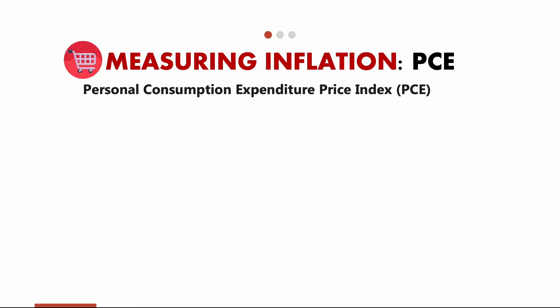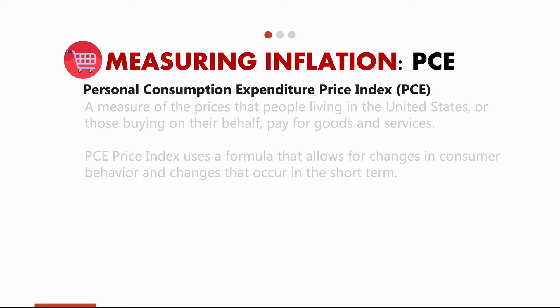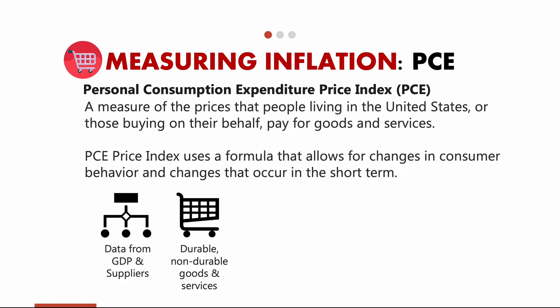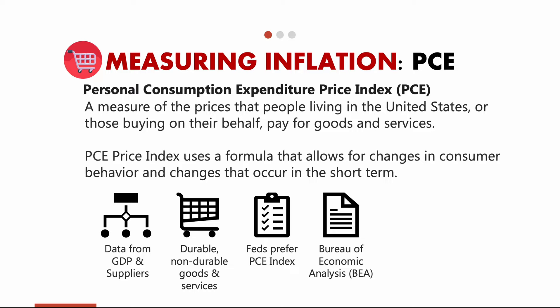The Personal Consumption Expenditures price index, also known as PCE, has a different approach to measuring inflation. It measures prices that people living in the US, or those buying on their behalf, pay for goods and services. Most importantly, the PCE formula accounts for changes in consumer behavior and short-term changes. PCE uses data from GDP reports and supplier data, and looks at durable goods, non-durable goods, and services. Examples of durable goods are houses, refrigerators, and cars; non-durable goods include pizza, paper towels, and food items. The Federal Reserve prefers the PCE index, and the PCE index measurement is managed by the Bureau of Economic Analysis, or BEA.